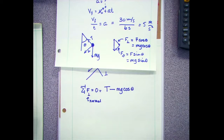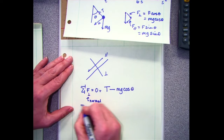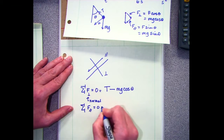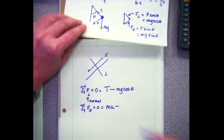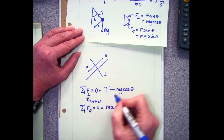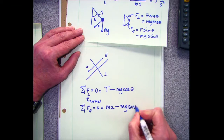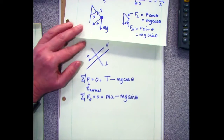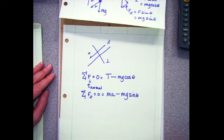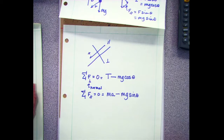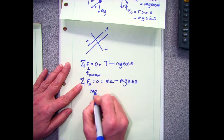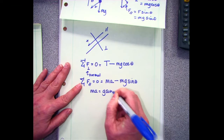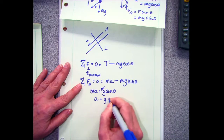mg is mass times gravity — the weight of my object. For the force parallel, that's going to be mass times the acceleration going down the hill, with down the hill as positive. But there is the bob in the other direction. So now I've got two equations, two unknowns: I don't know tension, and I don't know the angle. I can solve: mass cancels out, and I get a equals g sine of the angle.